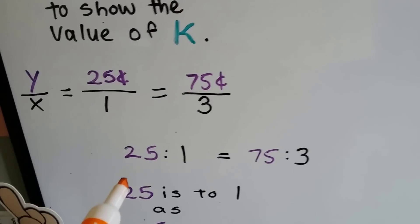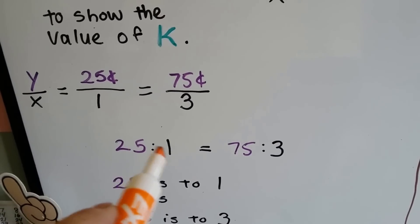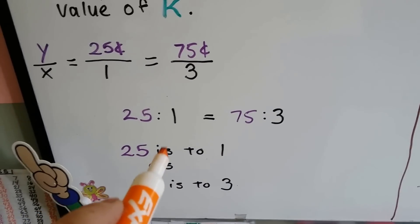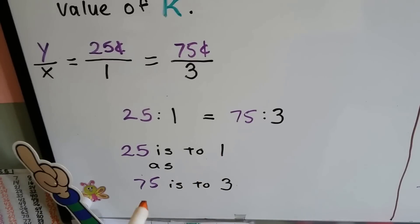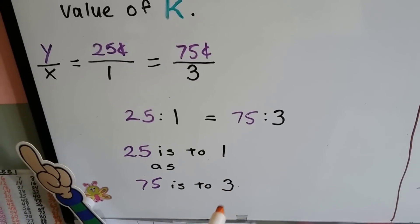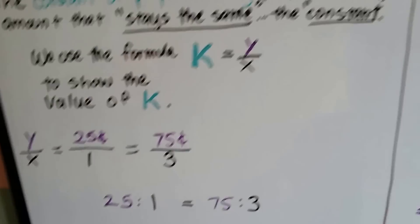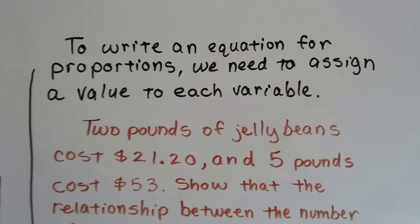It can also be written as a ratio of 25 to 1, which is equal to 75 to 3. 25 is to 1 as 75 is to 3. They're in proportion with each other. To write an equation for proportions, we need to assign a value to each variable of the K equals y over x.